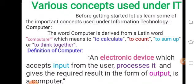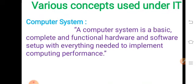A computer performs three operations: it accepts input, it processes that input, and it produces a result in terms of output. So a computer is an electronic device which accepts input from users in terms of data. The second definition: a computer system is a basic, complete, and functional hardware and software setup with everything needed to implement computing performance. So a computer system is a combination of hardware and software used to perform computing operations like accepting data, processing data, and producing results.